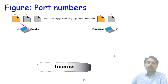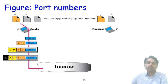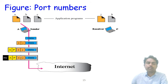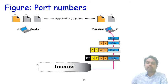In summary: data comes from the sender's port address A, with J as the receiver port address. It goes to the network layer, then to the data link layer, which adds a header with source and destination addresses. Physical addresses, port addresses, and data are sent via the internet and reach the receiver. This is how port numbers work in sending data from sender to receiver.